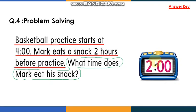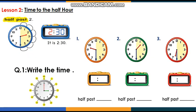Now let's move on to revise time to the half hour. This is something we learned before, so it's not that hard. If we draw a line in the middle of the clock, it divides the clock into two parts — we call each part a half.